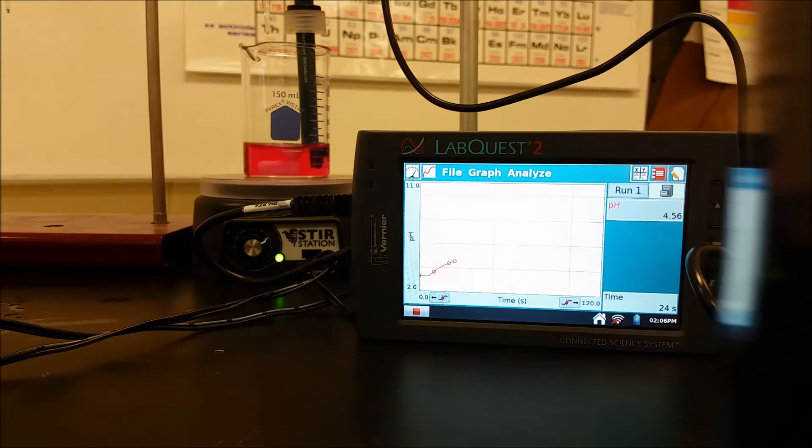Now at some point, the pH is going to be high enough where the color of the indicator is going to change. And that is called the endpoint of the titration. That's usually used when we don't have a pH indicator, like a meter like I have here, to tell us that the reaction is complete and equal amounts have been added.